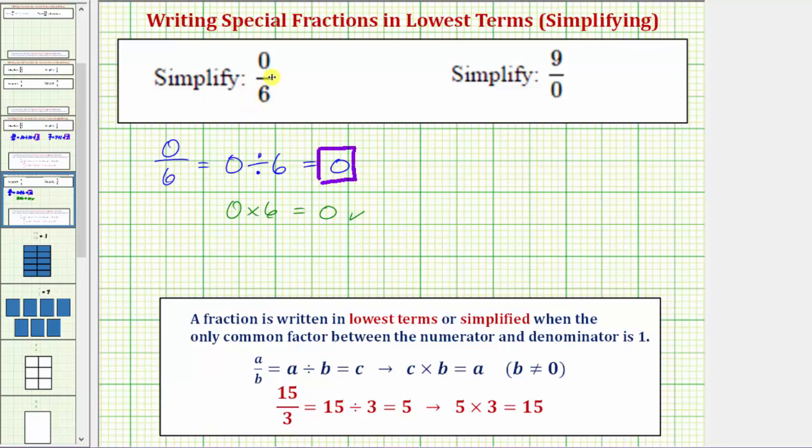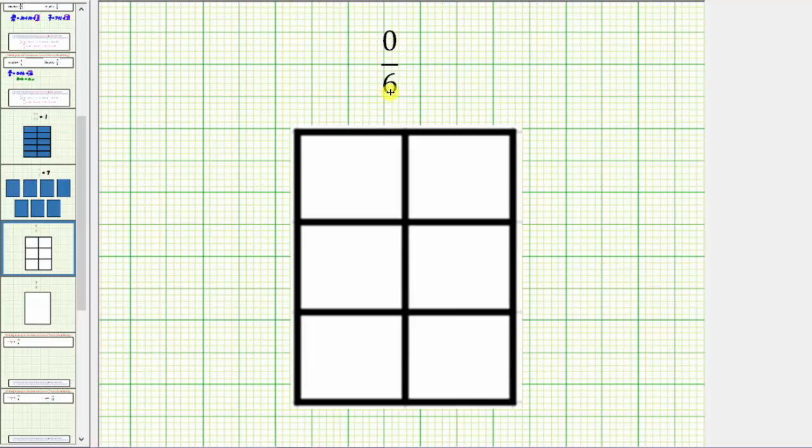Let's also think of this conceptually and model this fraction. We can think of zero sixths as zero one-sixths. So if we define this rectangle as one whole, because the denominator is six, we would cut or partition the rectangle into six equal parts or pieces as we see here.